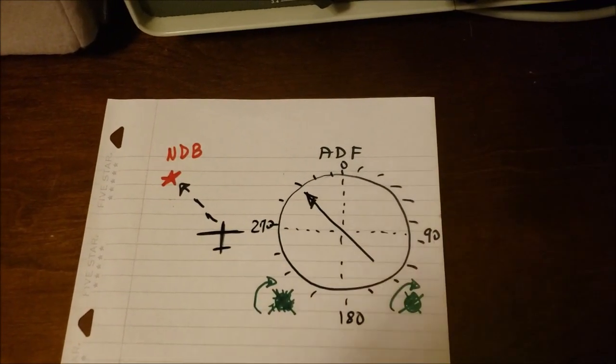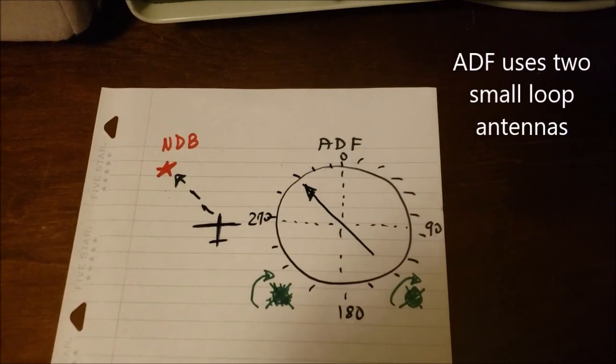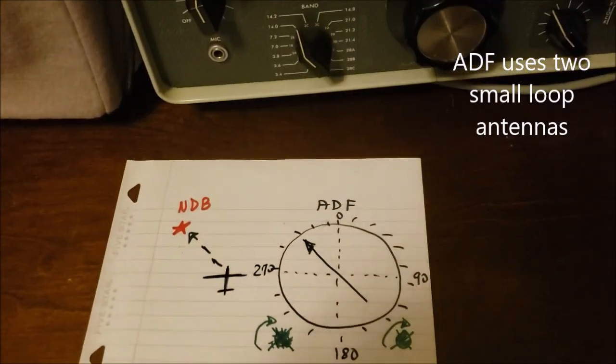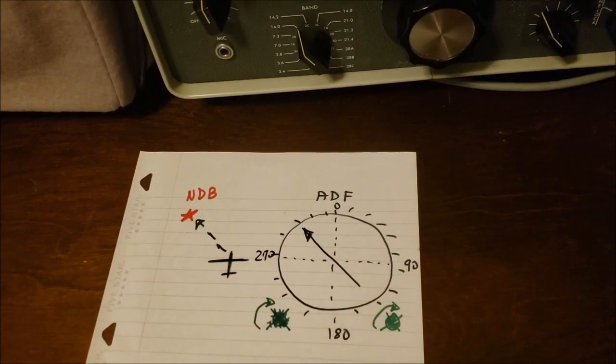The airplane is equipped with two crossed antennas, and those antennas rotate to receive the NDB, and thus point in the direction in which the beacon is.